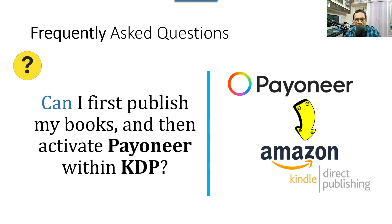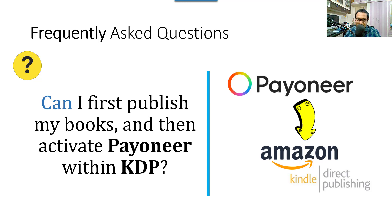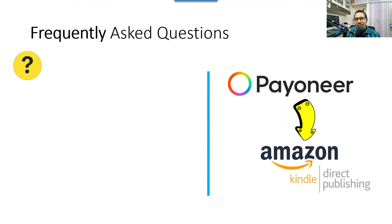Second question: can I publish my books and then activate the payment section in Amazon KDP later? I would suggest getting your account fully set up first before publishing, because you may start generating sales immediately. Moreover, you want your royalties to go into your bank account right away, so please get your bank and payment information set correctly in your KDP account before publishing.